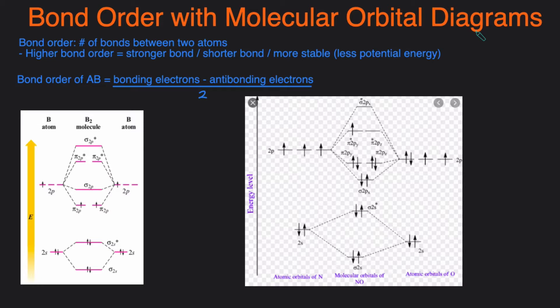We covered how to calculate the bond order using Lewis structures in the previous video so we're just covering the second technique in this video. Quickly, bond order is just the number of bonds that exist between two atoms.